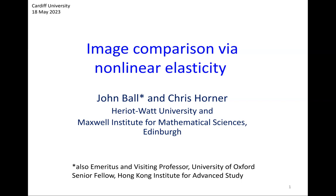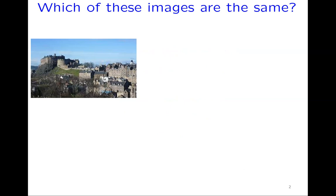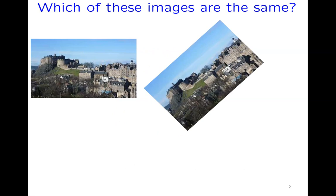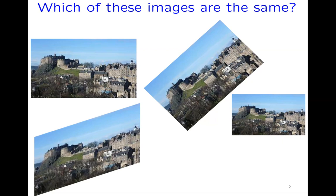Which of these images are the same? This first one is a picture of Edinburgh Castle and the old town with the Camera Obscura. Is the rotated version the same image or a different image? There's no right or wrong answer — either it's the same image because it's just rotated, or it's a different image because it's been rotated. This other one is just reduced in size — is that the same image or a different image?